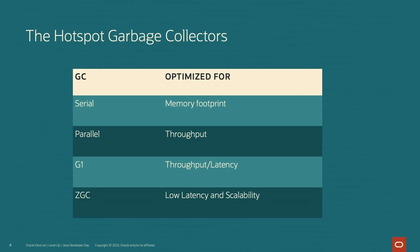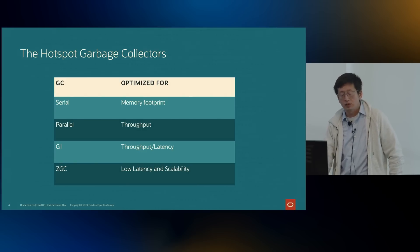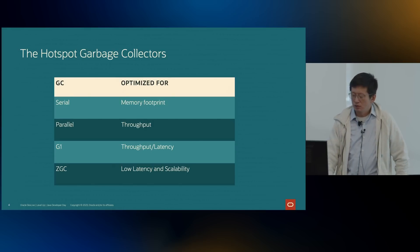Here we have a list of the Java collectors available in Hotspot that Oracle supports. We have the Serial GC, which is a simple collector optimized for smaller memory footprint — useful, for instance, in embedded systems. We have Parallel GC, which is a throughput-oriented collector. We have G1, which has been the default GC since JDK 9 and tries to provide a balance between throughput and latency for most applications. And we have ZGC, which focuses on providing low latency and scalability.